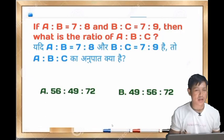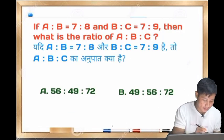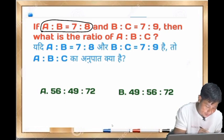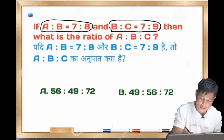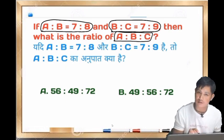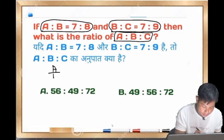Next question: S to B is 7 is to 8, B is to C is 7 is to 9, then what is S to C?